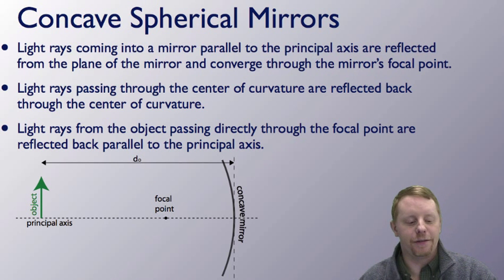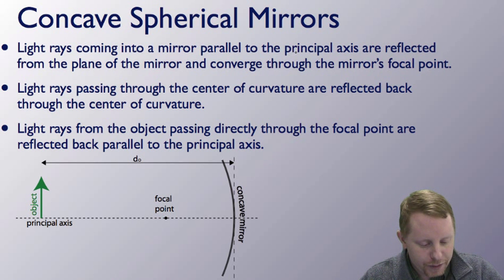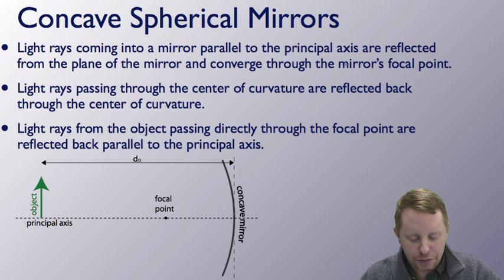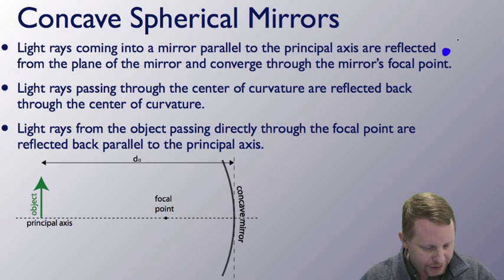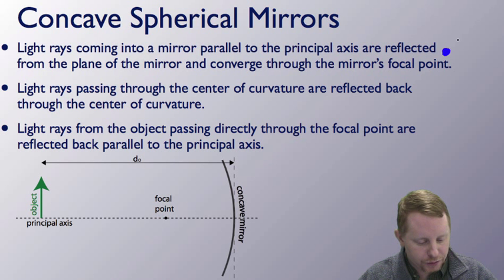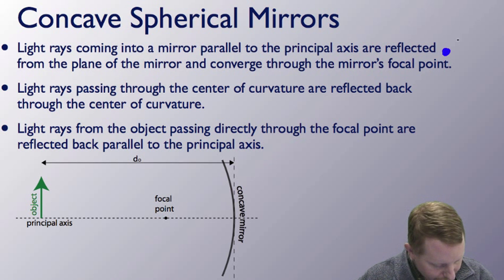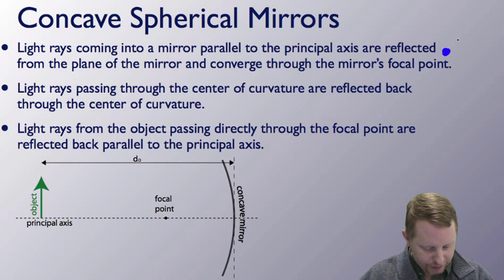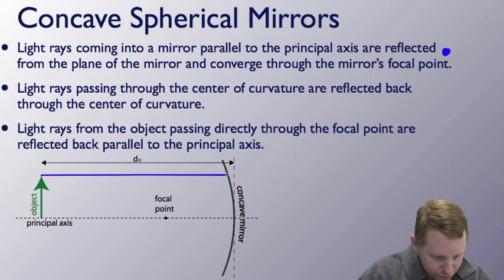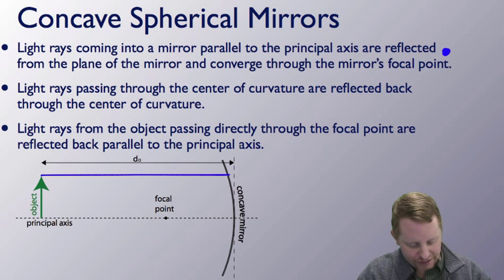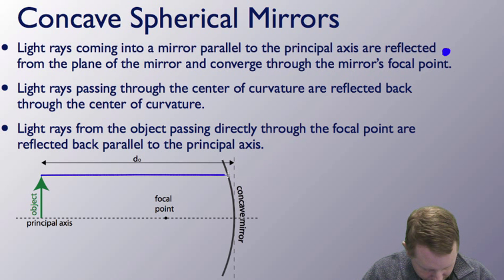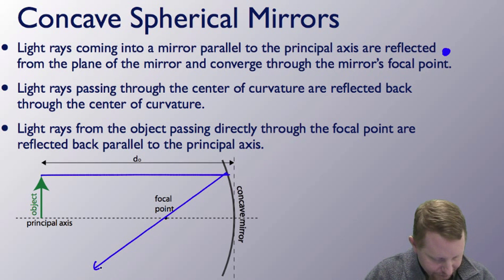Let's take a look at how this looks with ray tracing for a concave spherical mirror. Light rays coming into a mirror parallel to the principal axis are reflected from the plane of the mirror and converge through the mirror's focal point. So we draw our first ray from the object parallel to the principal axis — it reflects back through the focal point.